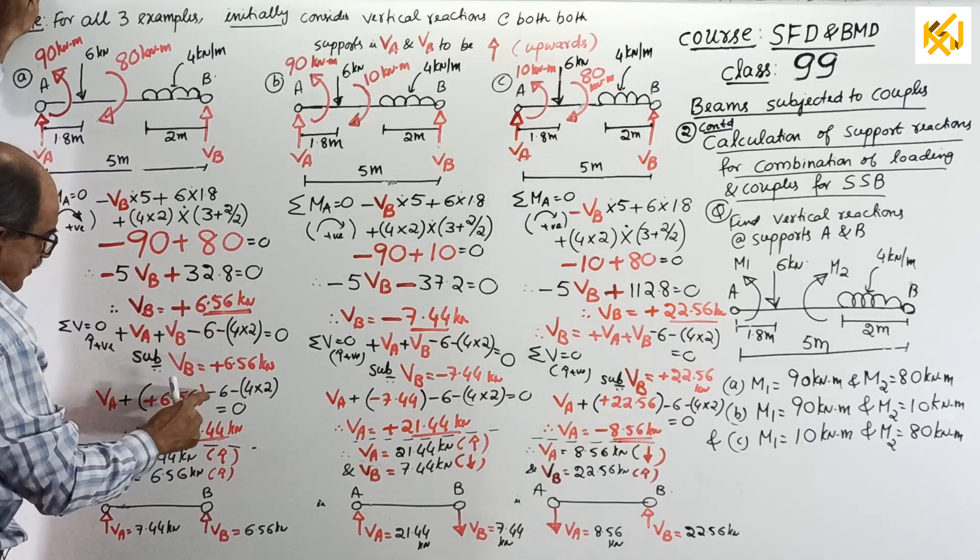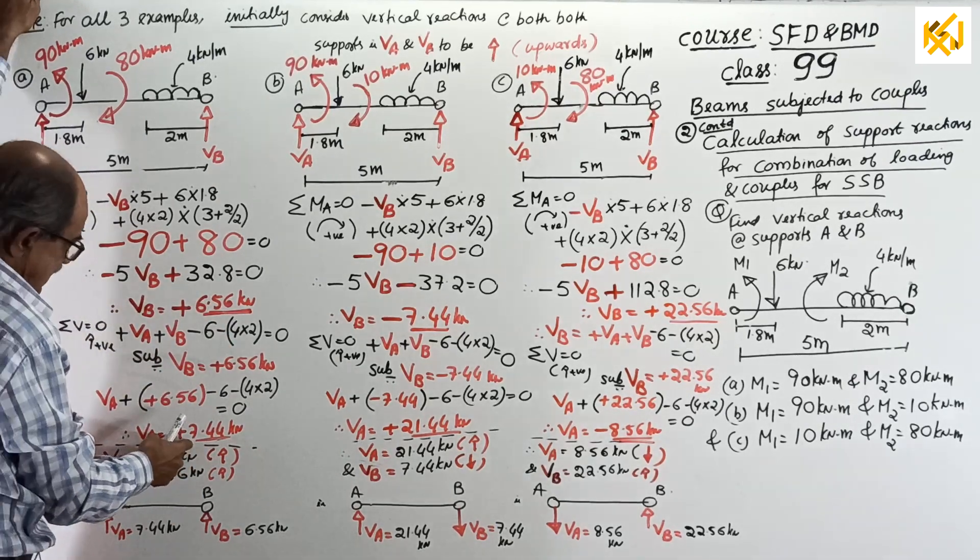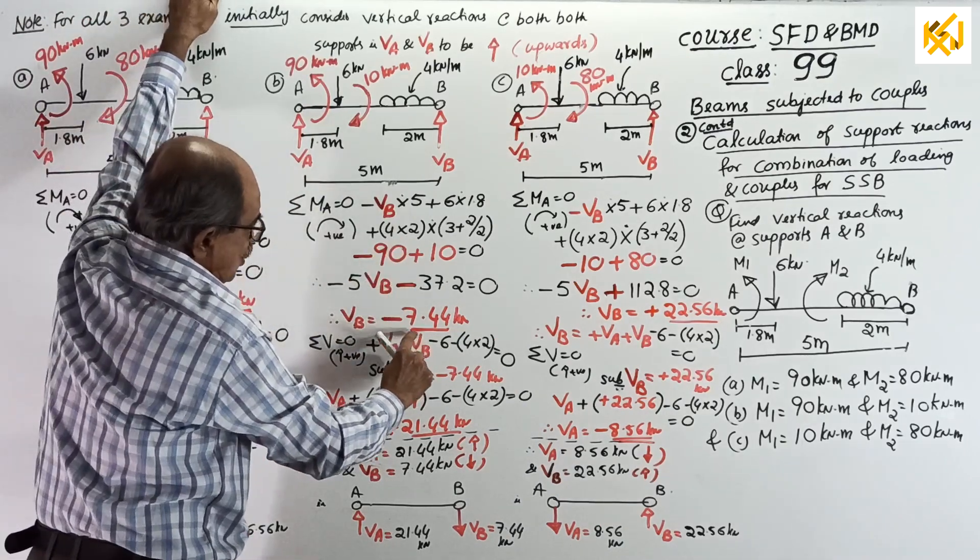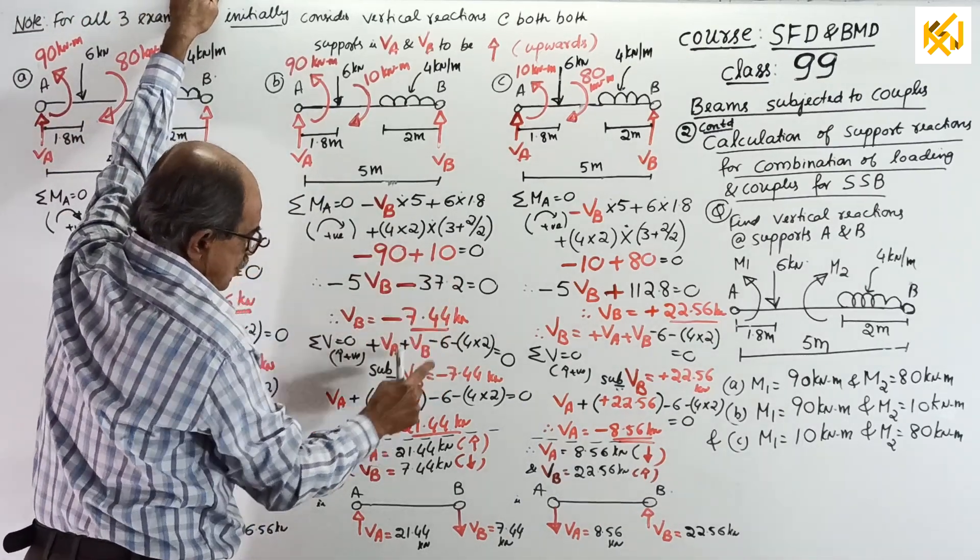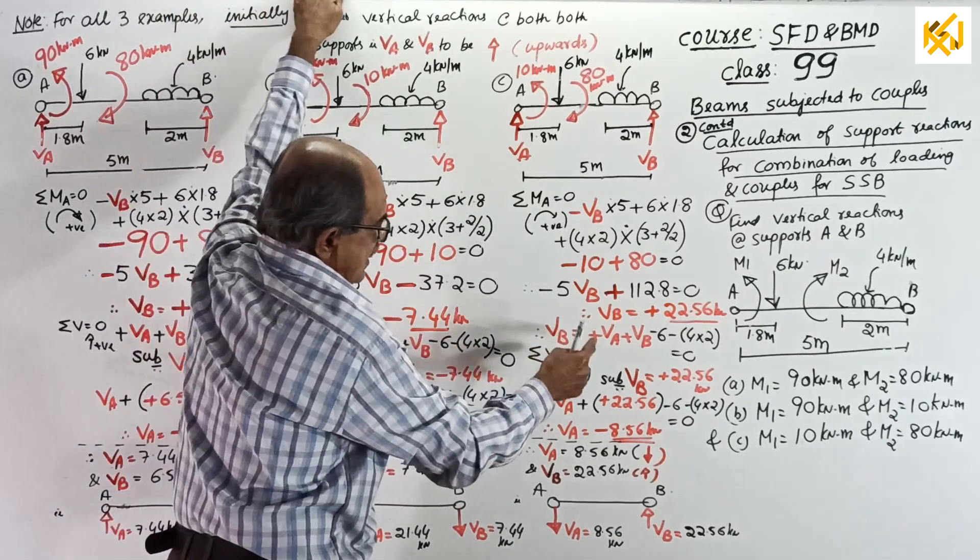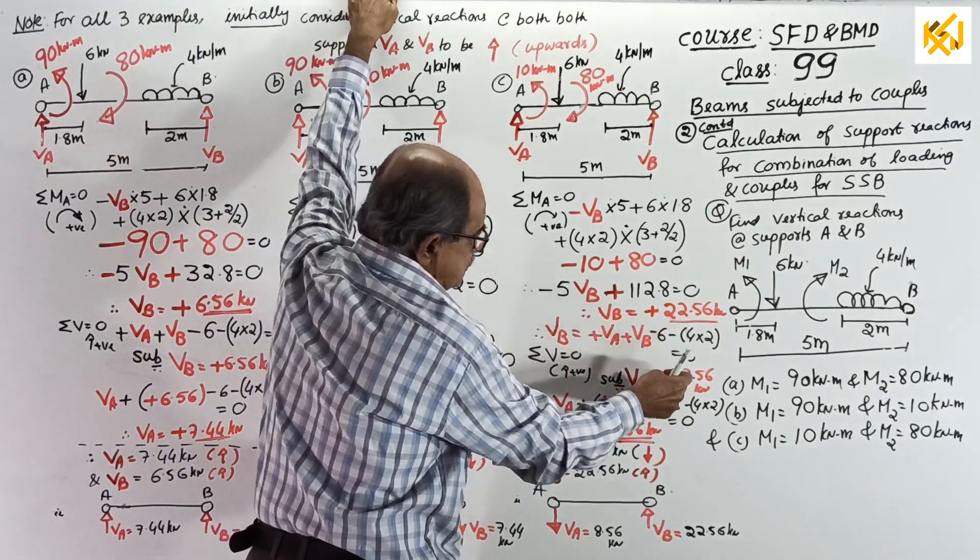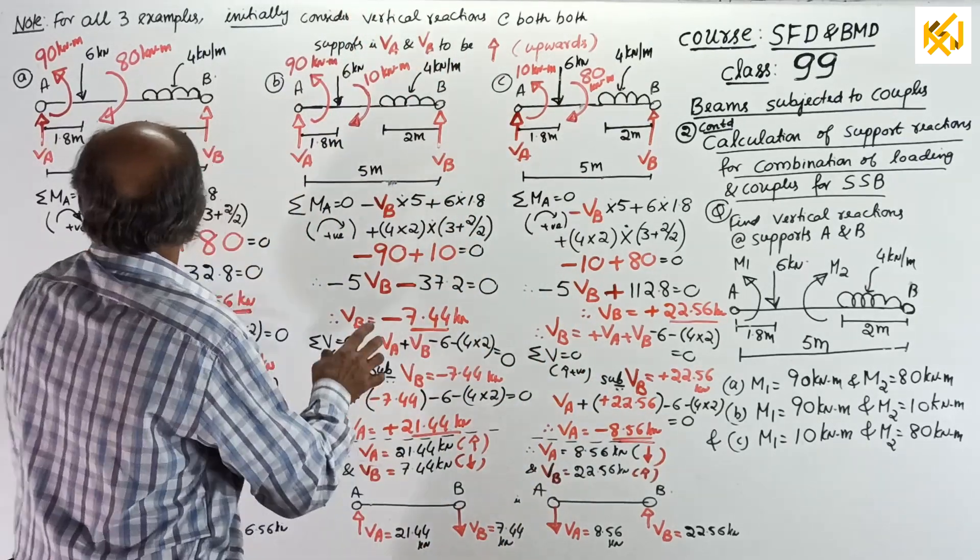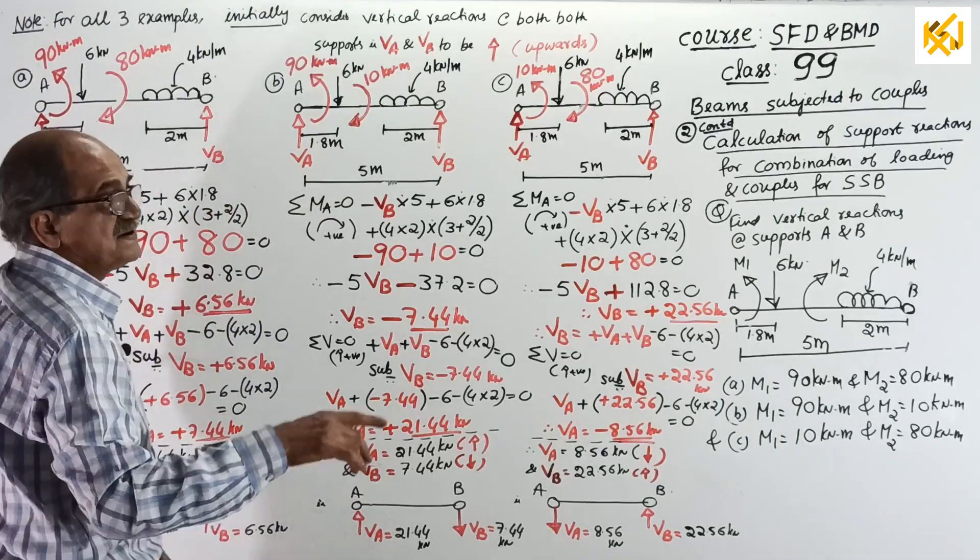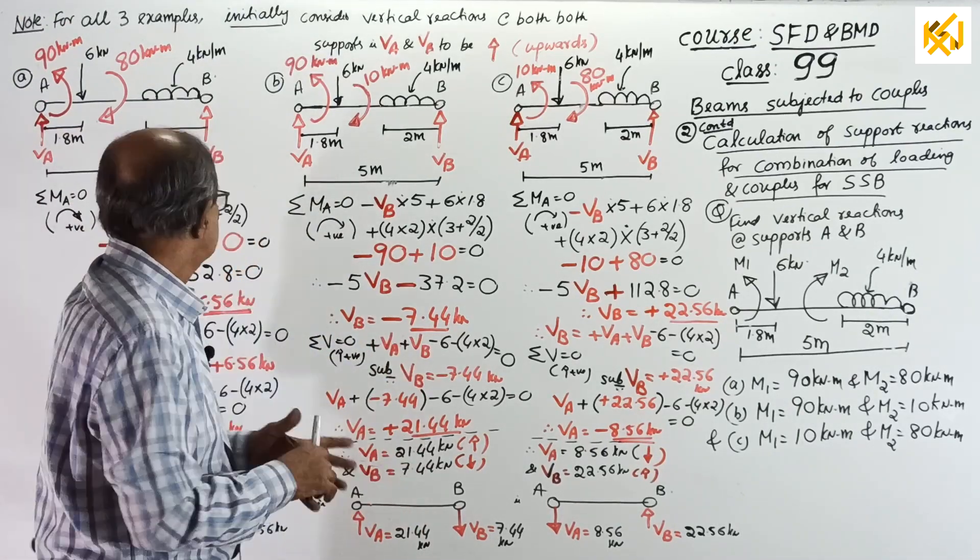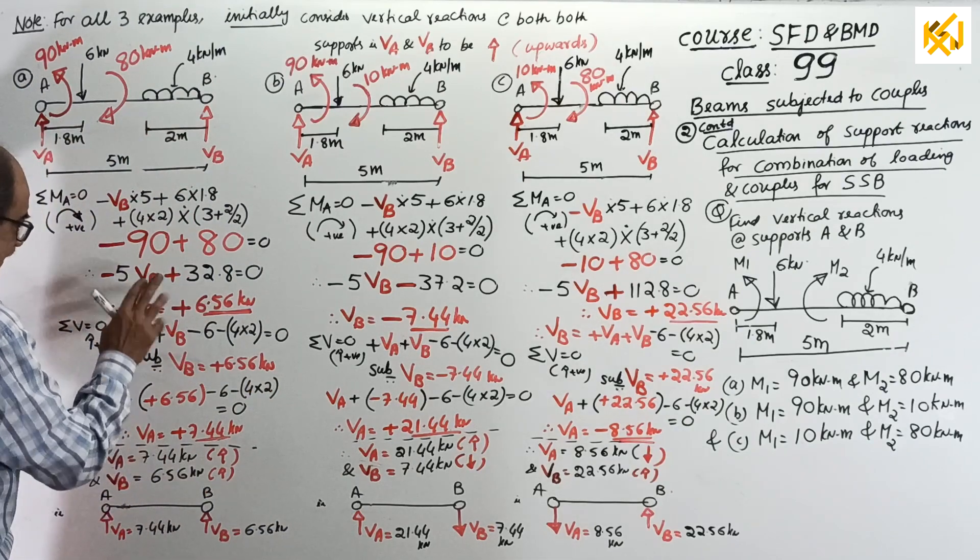Here, substitute VB, plus 6.56. See, I have shown the calculation. VA will come, plus 7.44. Here, substitute VB, equal to, minus 7.44. You get VA, equal to, plus 21.44. Here, substitute VB, equal to, plus 22.56. VA will come, minus 8.56. See, you can observe here. Last, I will tell you. Or, next class, I will tell you. Regarding the equilibrium, next time, I will tell. So, start. So, we got reaction.